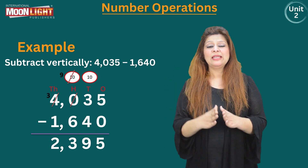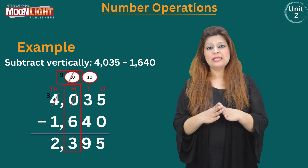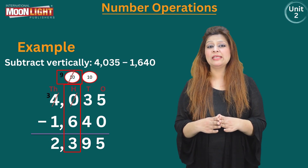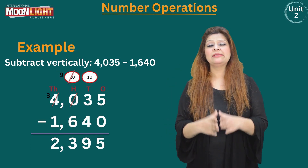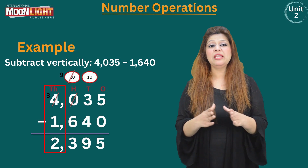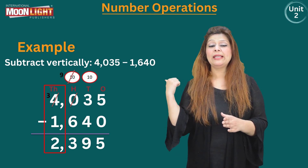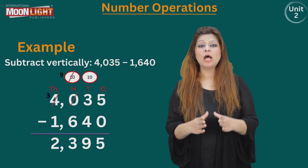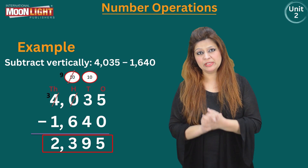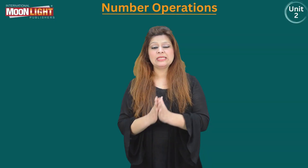The number at the hundreds place is now 9. 9 minus 6 is 3, so we write 3. The number at the thousands place is now 3. 3 minus 1 is 2, so we write 2, and also copy the comma. The final answer is 2,395. This is subtraction with borrowing.